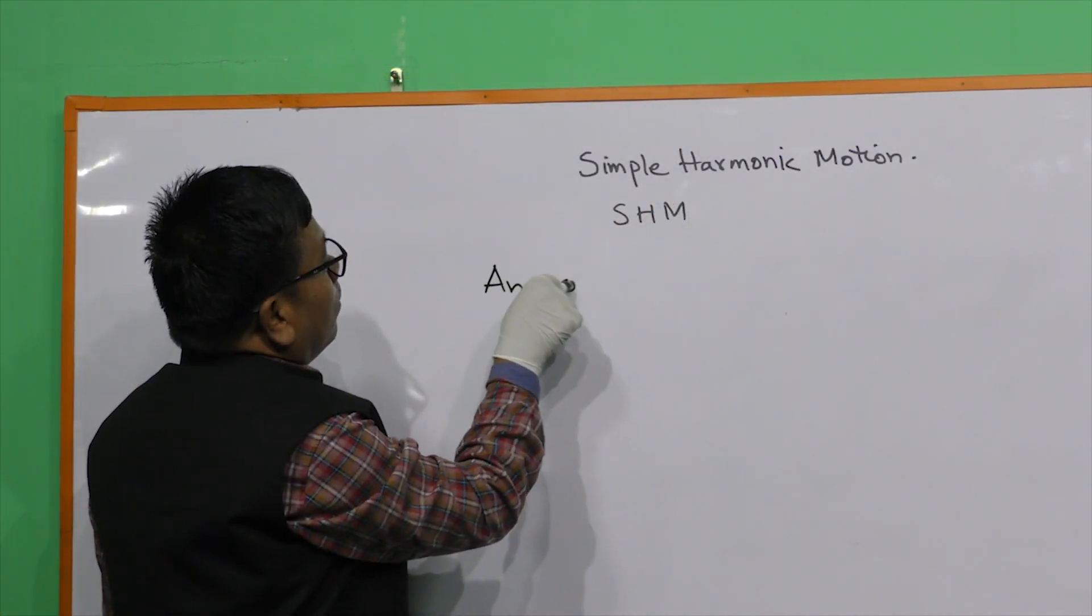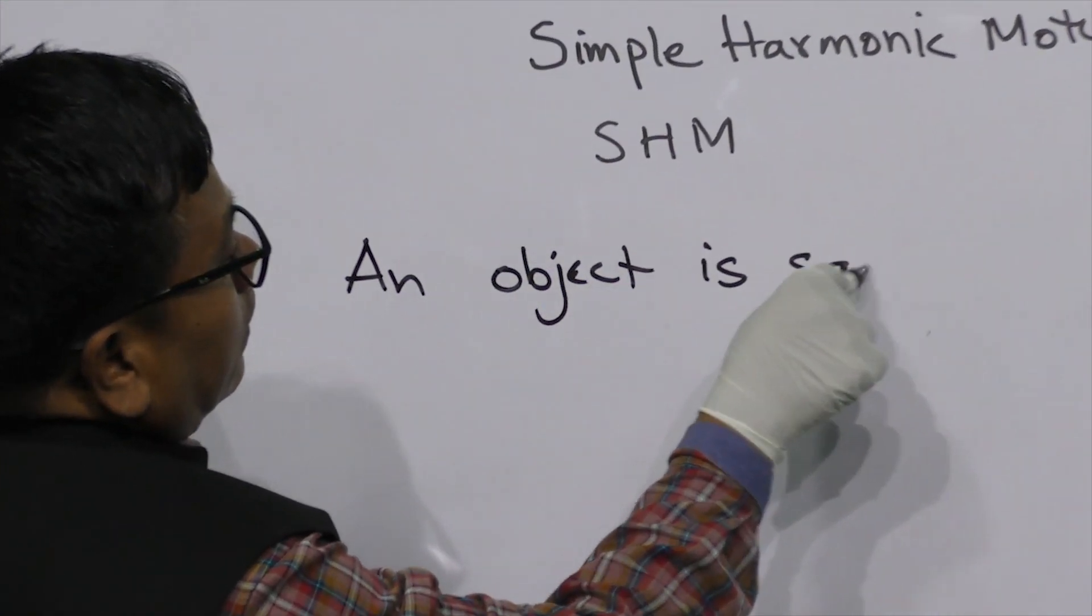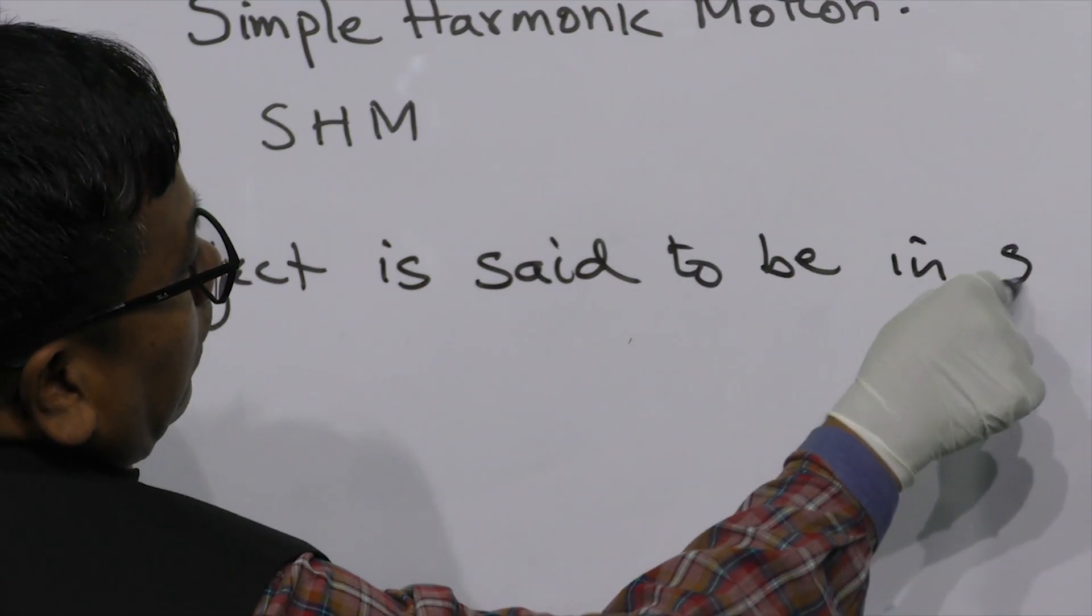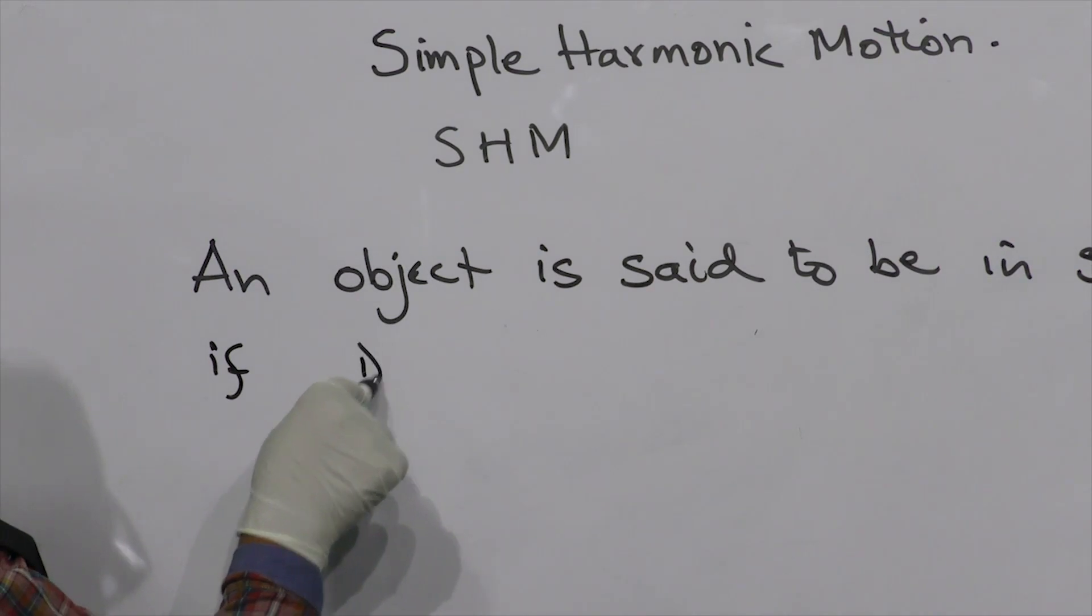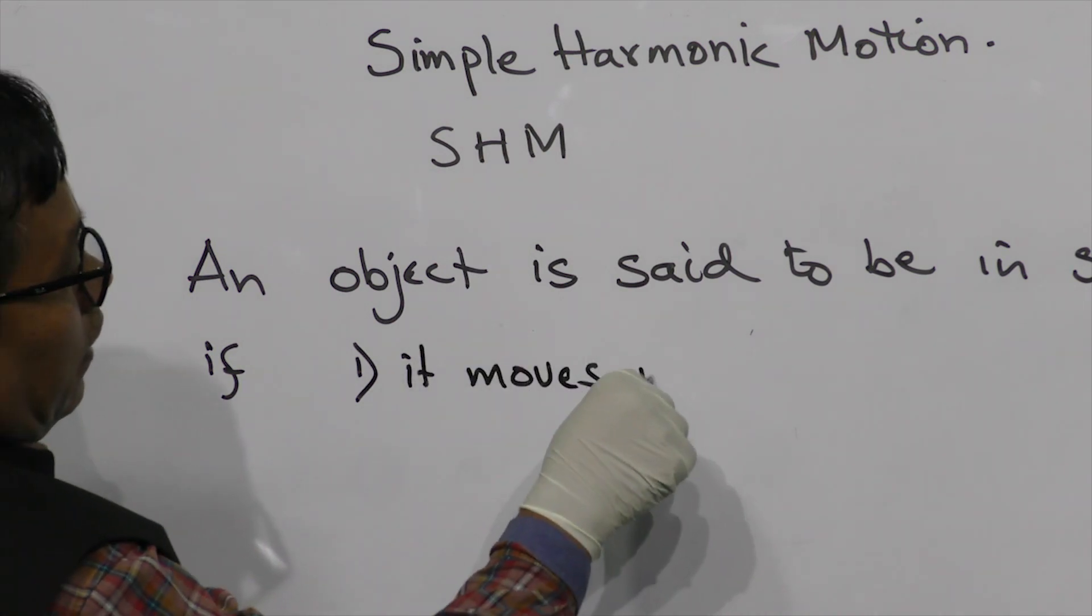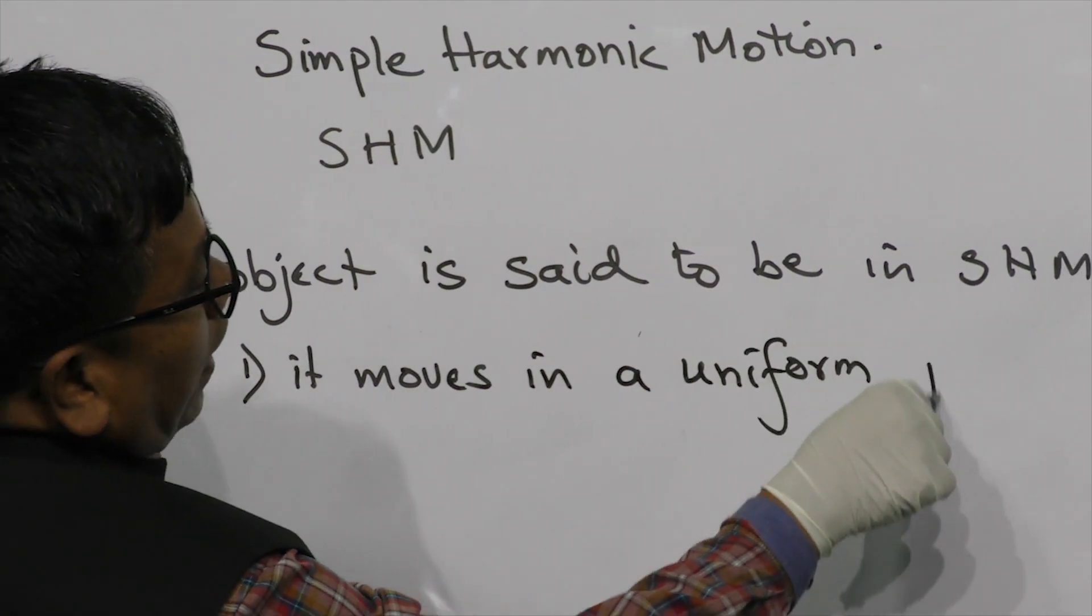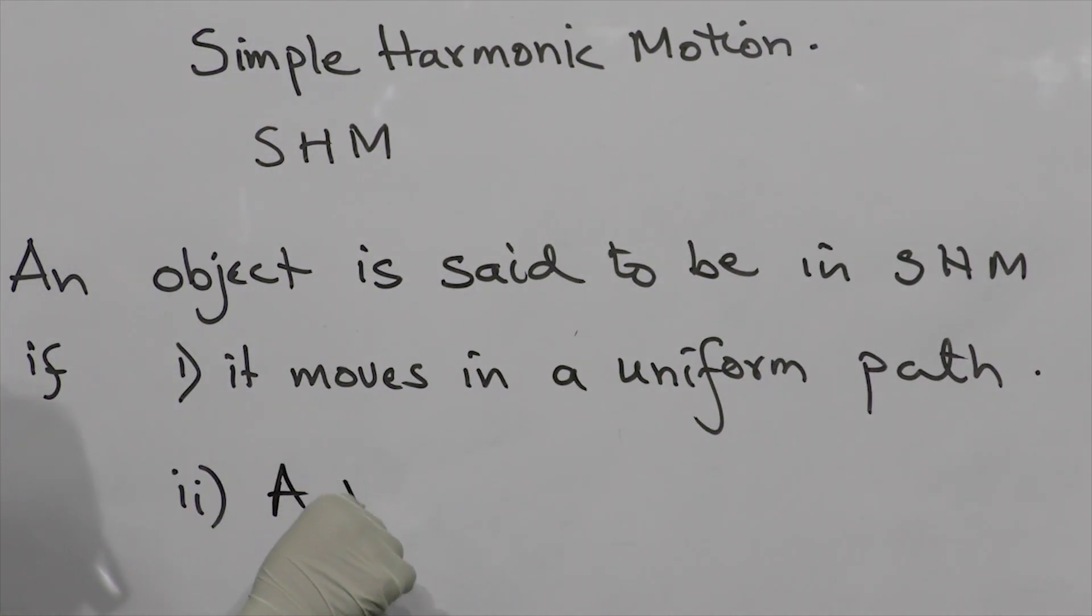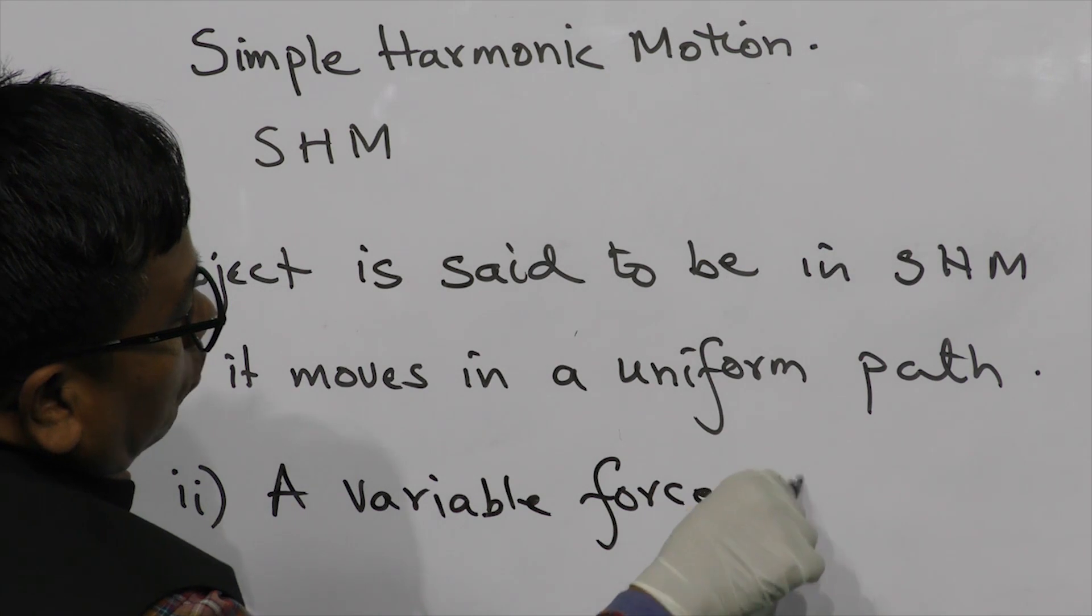An object is said to be in simple harmonic motion if number one, it moves in a uniform path. Number two, a variable force acts on it.